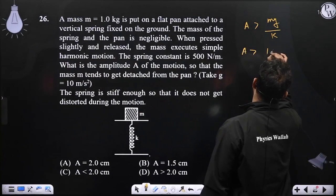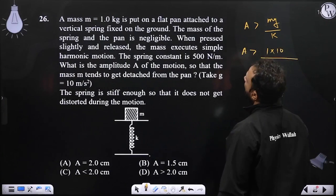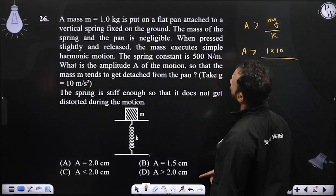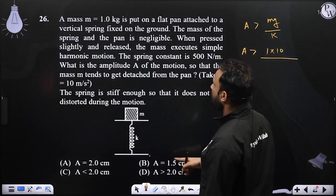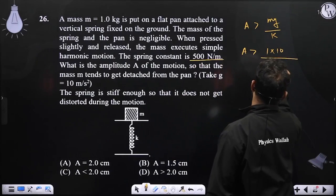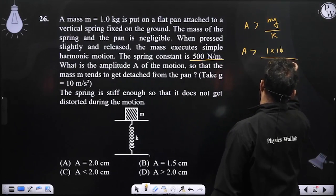m is 1, g is 10, and the value of k is given here. k is the spring constant, k is 500 N per meter.